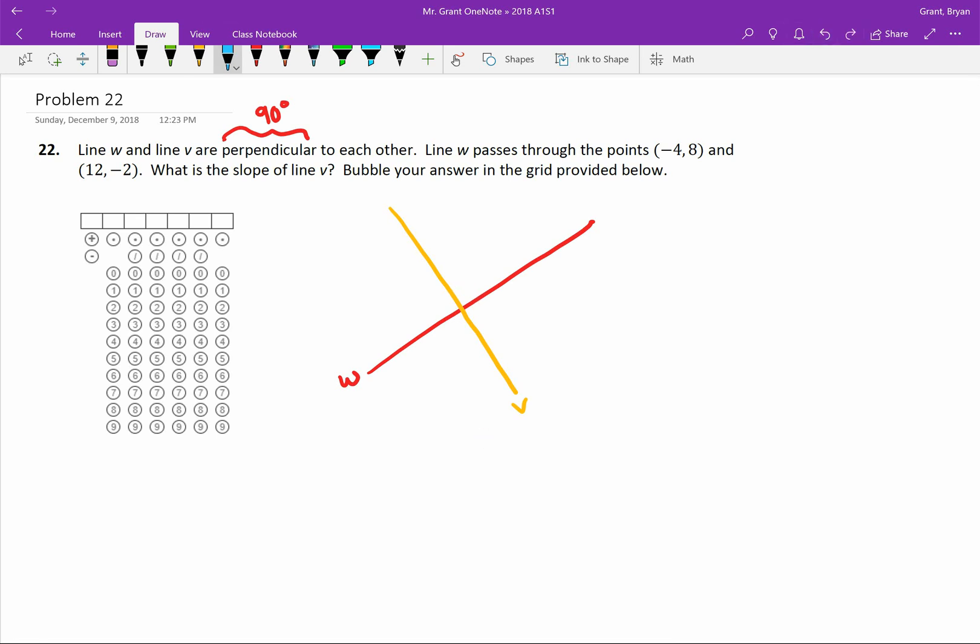Now, that's all good to know that they cross at 90 degrees, but how does that actually help us answer the question? Because the question tells us that line W passes through the points (-4, 8), and I'm just going to put them randomly on here. It doesn't really matter where. And (12, -2). So I know something about line W, but then the question says,